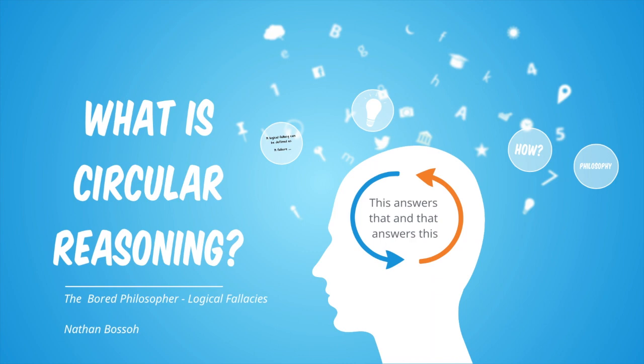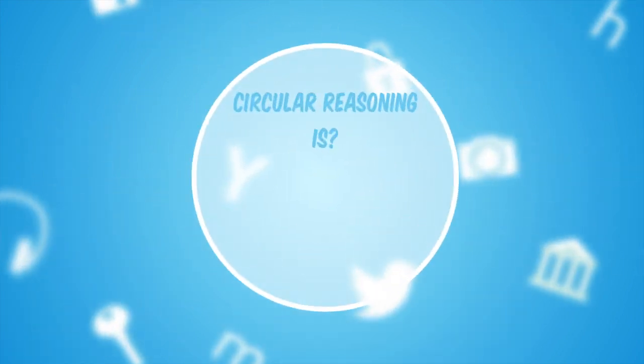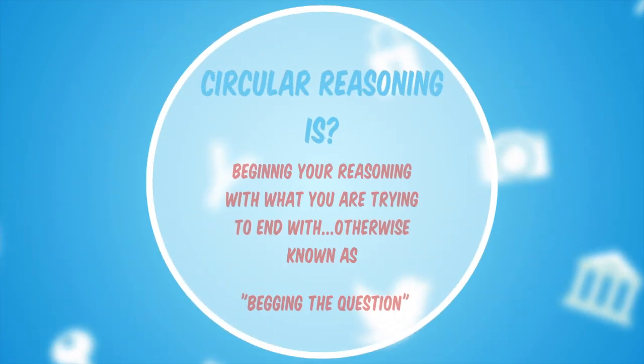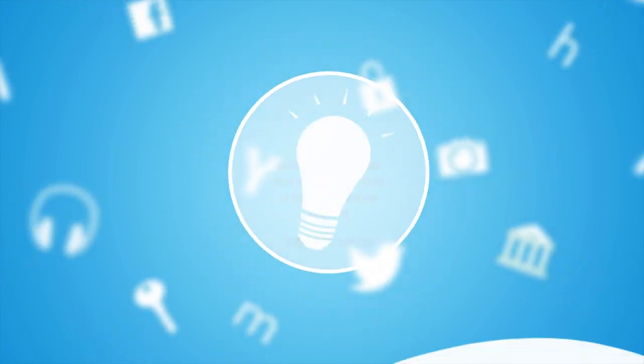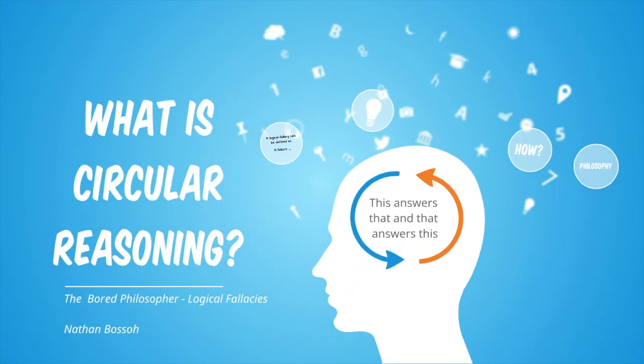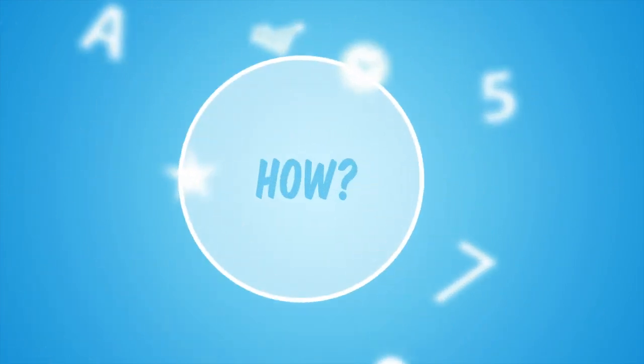Circular reasoning can be defined as beginning your reasoning with what you are trying to end with. This is otherwise known as begging the question. Let's look at two examples of this we may encounter in life.